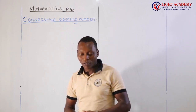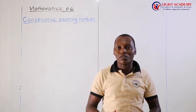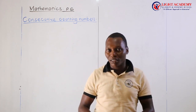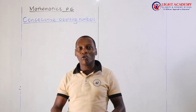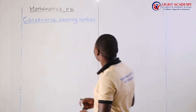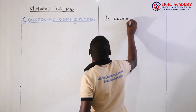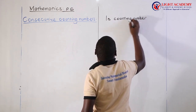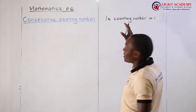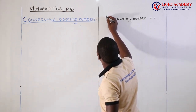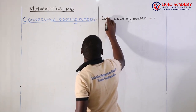Someone could ask: how do we get the counting numbers? What is the order? Assuming I have the first counting number, how do I get the next one? The logic here is that counting numbers keep on increasing by an addition of 1 to the previous number. The first counting number is 1.